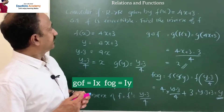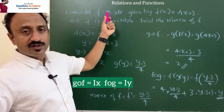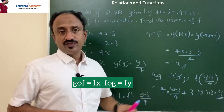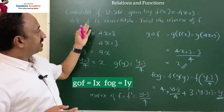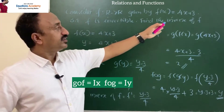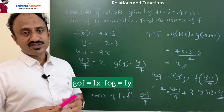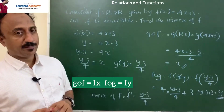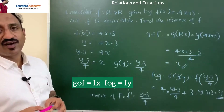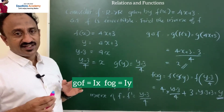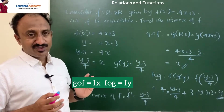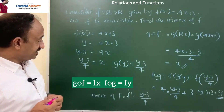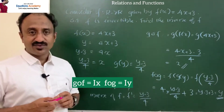Let us do a problem. Consider a function f from ℝ to ℝ given by f(x) = 4x + 3. We have to show that f is invertible and find the inverse of f. The condition for invertibility is: g∘f = I_X and f∘g = I_Y.